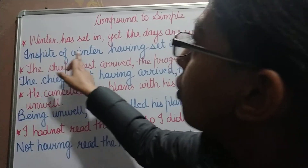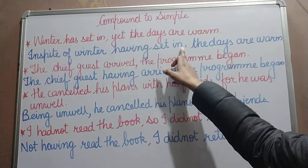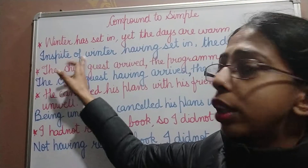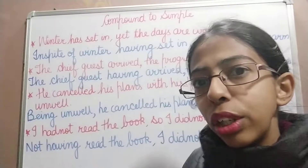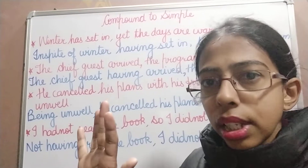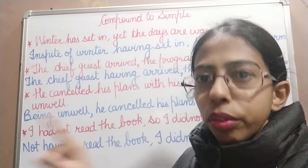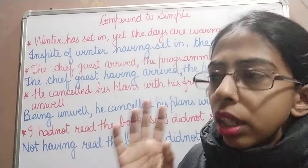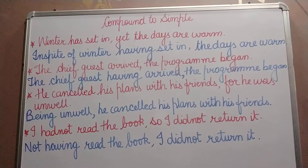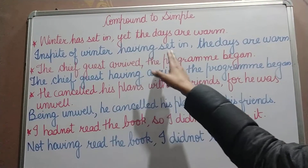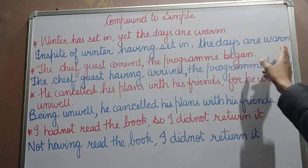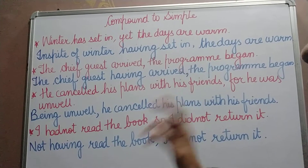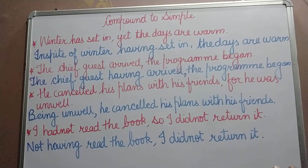'In spite of winter having set in, the days are warm.' Don't confuse — 'in spite of' is a preposition, not a conjunction. Both 'in spite of' and 'despite' are prepositions. So 'in spite of winter having set in, the days are warm' is now one sentence with one subject and one verb.